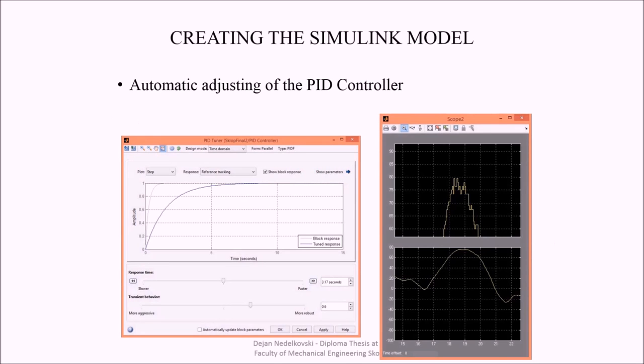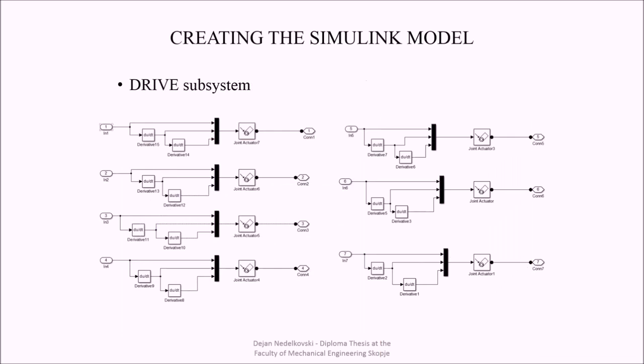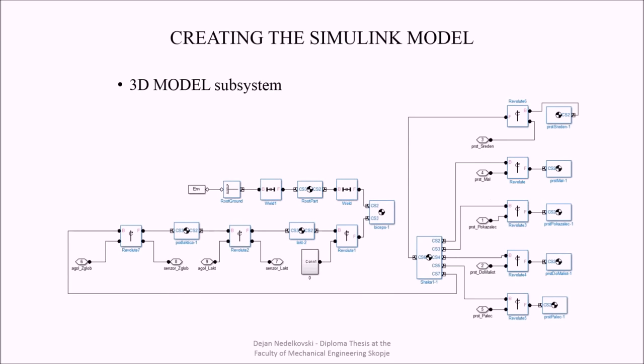In the fourth subsystem I am using joint actuator blocks for driving the joints of the 3D model. The fifth subsystem is the 3D model, which was automatically generated and consists of body and joint blocks.